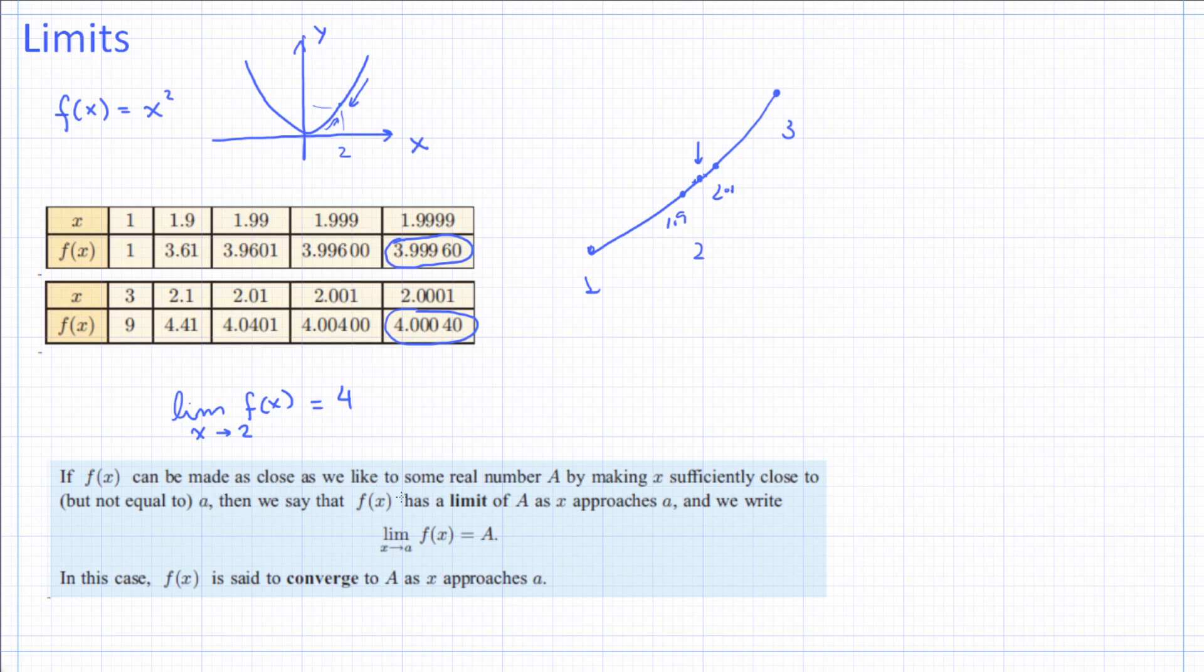Now, then we say that f(x) has a limit of A as x approaches a, and we write limit x going towards a, of f(x), when x approaches a equals A. In this case, f(x) is said to converge to A as x approaches a.